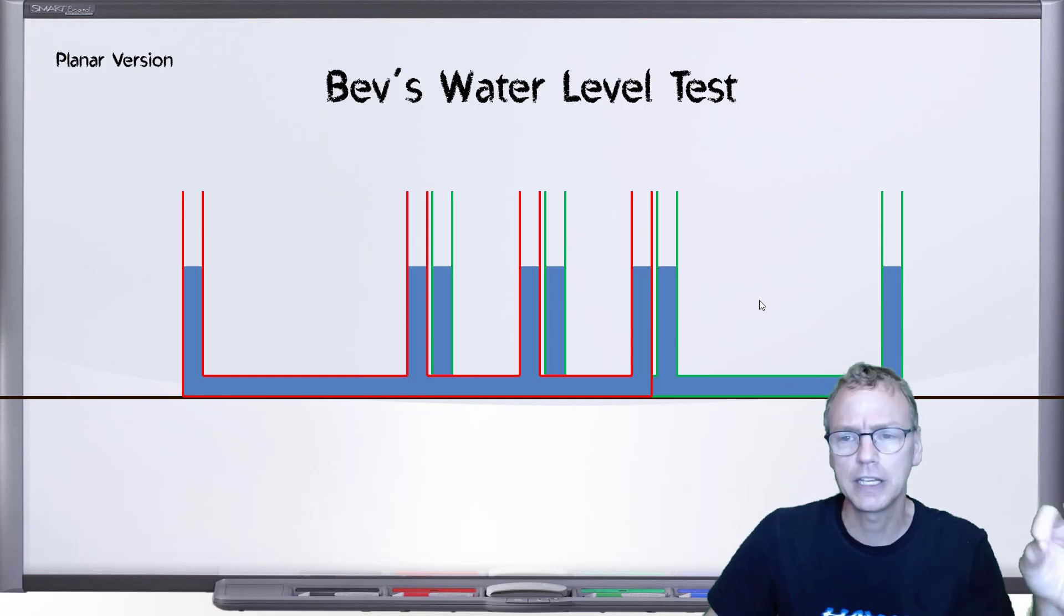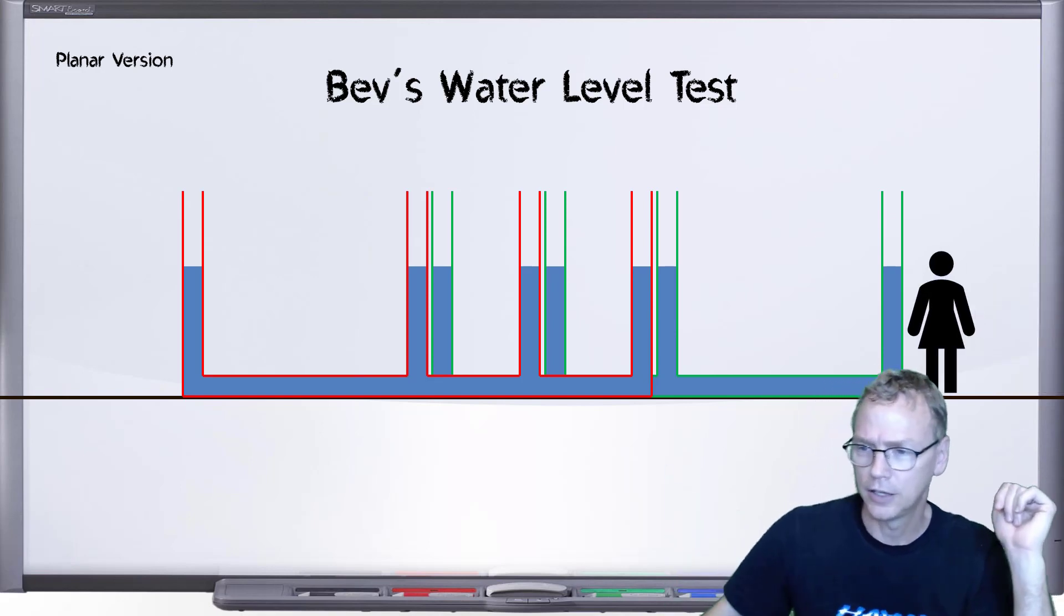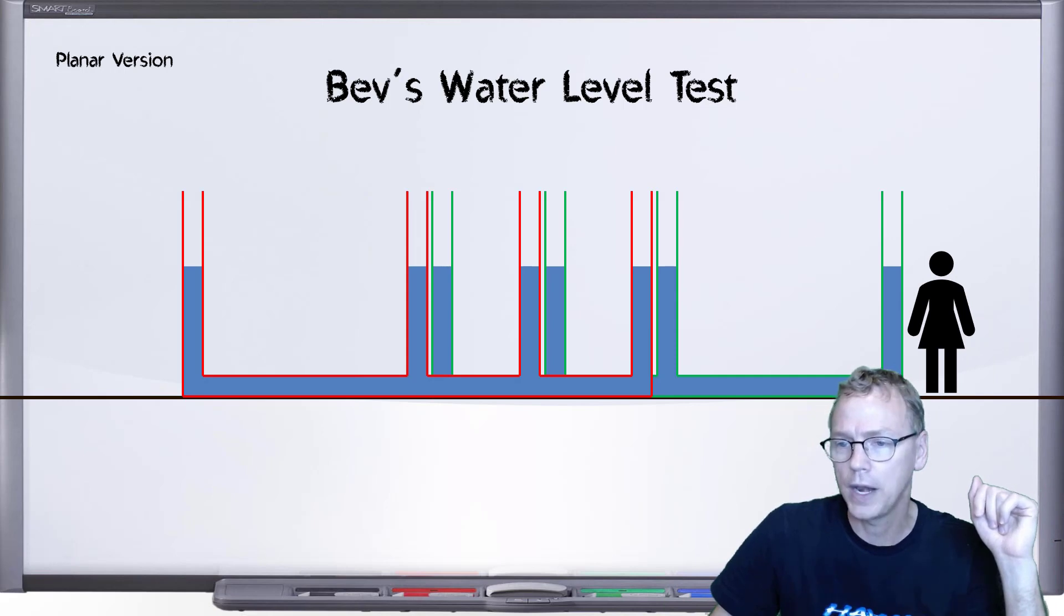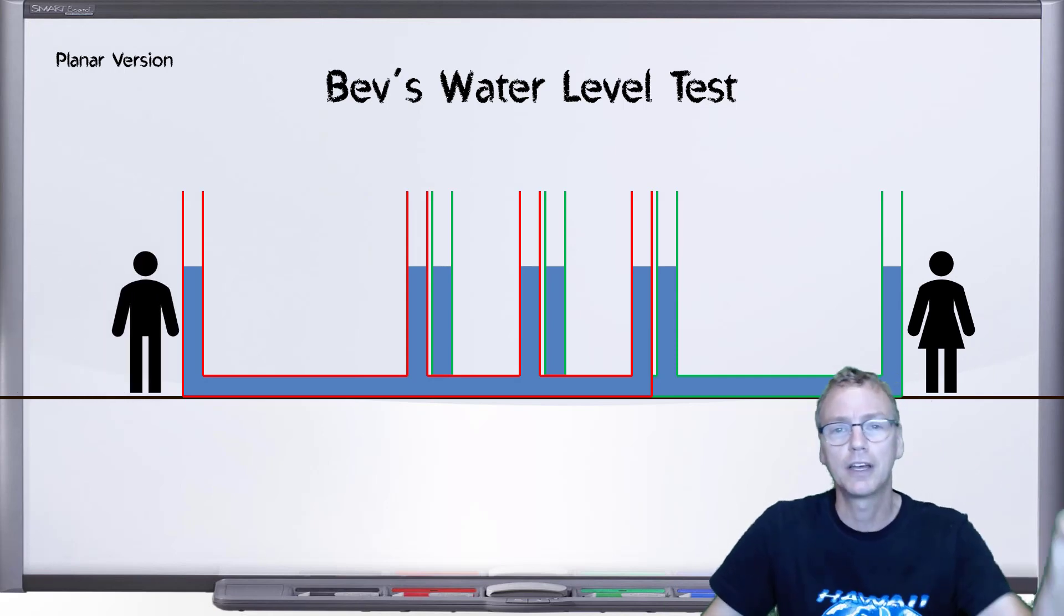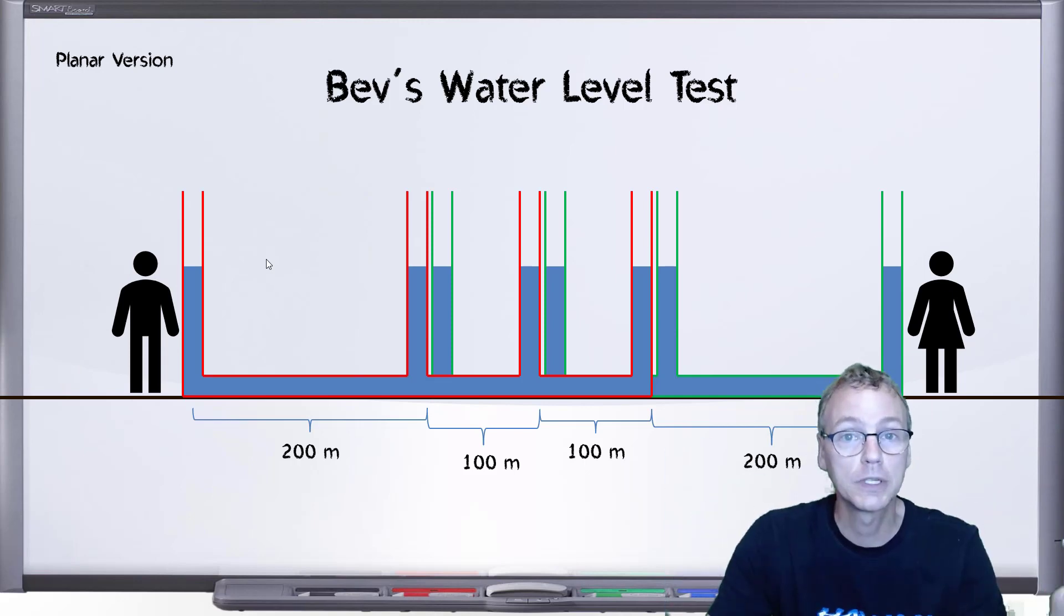Now Bev had asked specifically, as I draw this diagram, could I please put an observer, a human being, at either end. So let's do that. Put a stick person lady over there at the one end and at the other end we have a stick man. How do we perform the actual test? What are the measurements that we take?